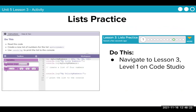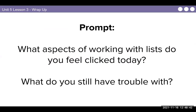You are going in to Unit 5, Lesson 3 on code.org and work your way through your levels. Read the code, create a list of numbers for the list 'my unlucky numbers'. Use the console log to print to the console. What aspects of working with lists do you feel clicked today? What do you still have trouble with? We are going into our make tomorrow, so make sure to mull over what is it that's not clicking.